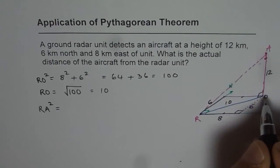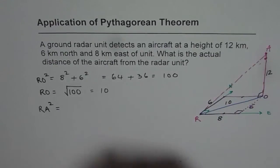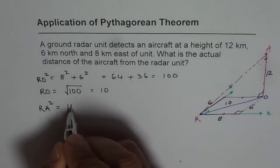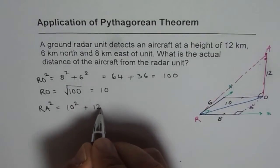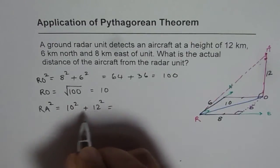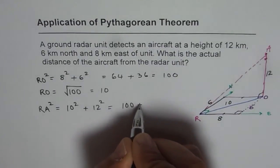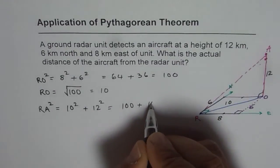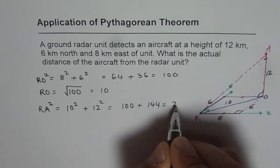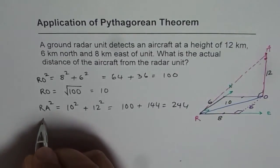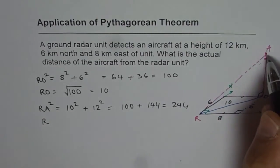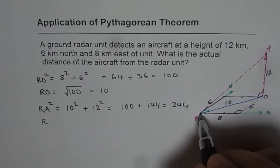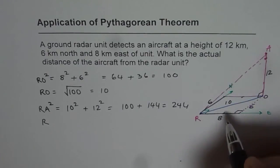This is along the ground and that is vertical to the ground. So RA square is 10 square plus 12 square, which is 10 is 100 and 12 is 144. So it is 244.